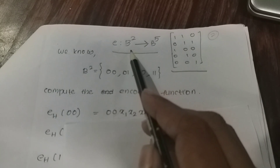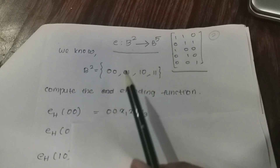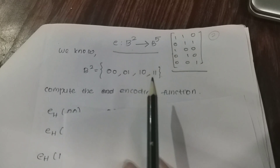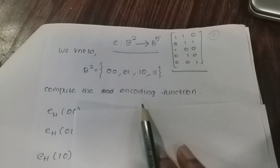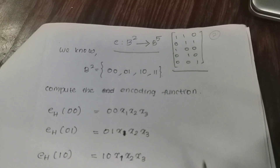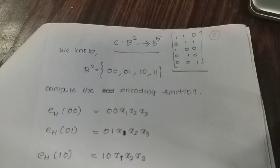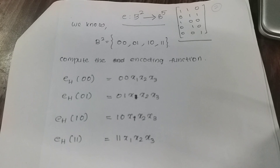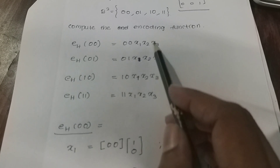The domain is b². We are going to map the 4 elements of b² to b⁵. We will compute the encoding function E using this map from b² to b⁵. We will fill 2 positions for the input and 3 check positions x1, x2, x3. We start with H(0,0).